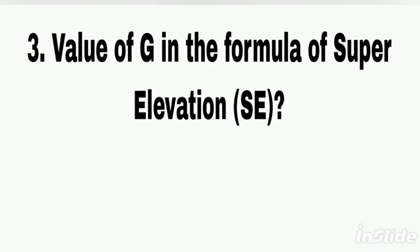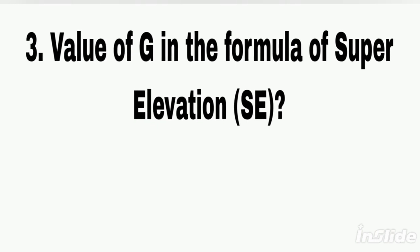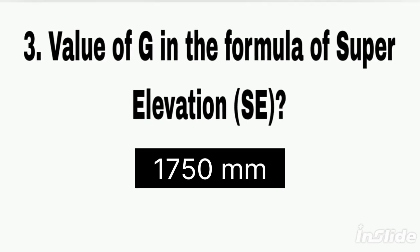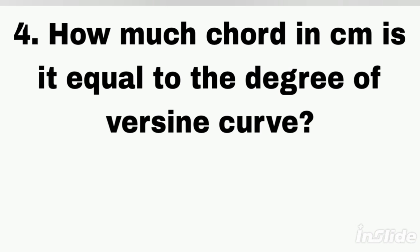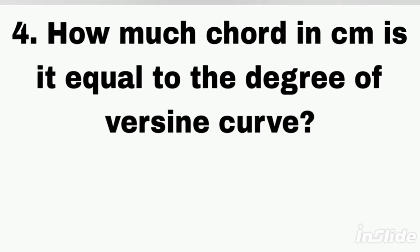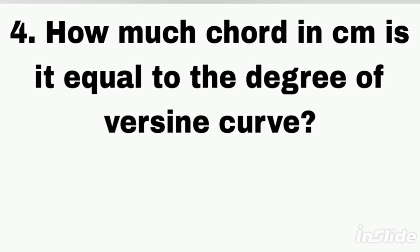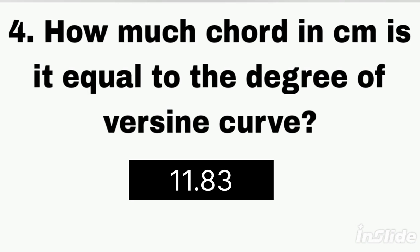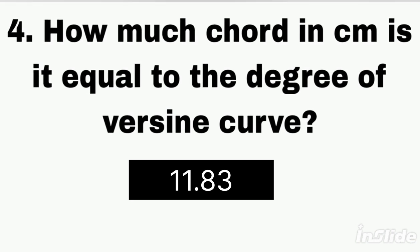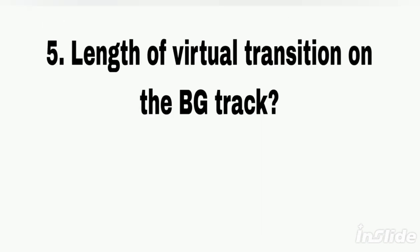Q3. Value of g in the formula of superelevation. Answer: 1750 mm. Q4. How much chord in centimeters is equal to one degree of a version curve? Answer: 11.83.